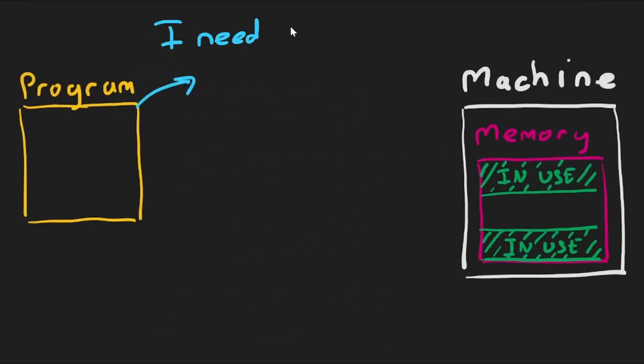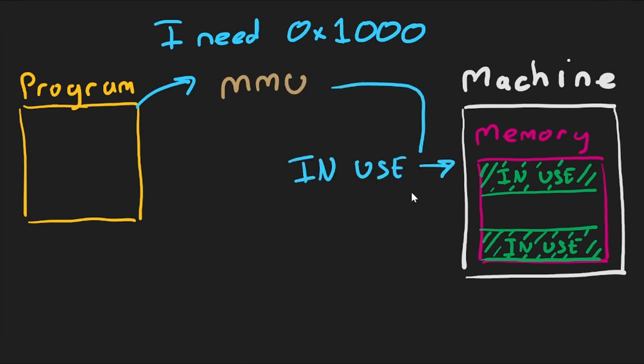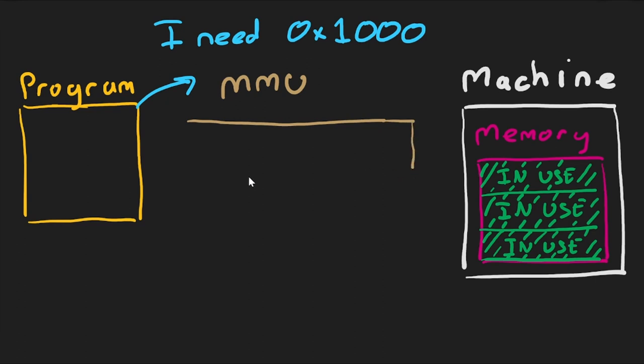Now, instead of requesting a specific area of memory, the computing machine instead requests memory from the MMU, which looks up the physical memory and returns the address. But the physical address returned is not the same one that is presented or was requested by the original program.